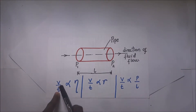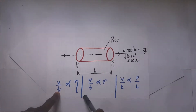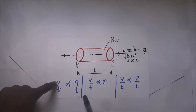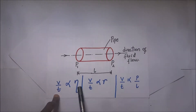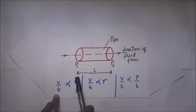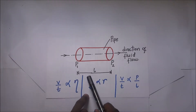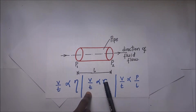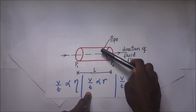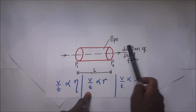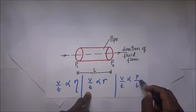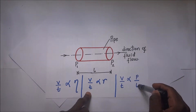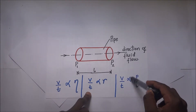First, the volume flow rate, which we represent as volume divided by time, is going to be affected by the viscosity of the liquid. The volume flow rate is also going to be affected by the radius of the pipe in which it is flowing, and also by the pressure gradient.